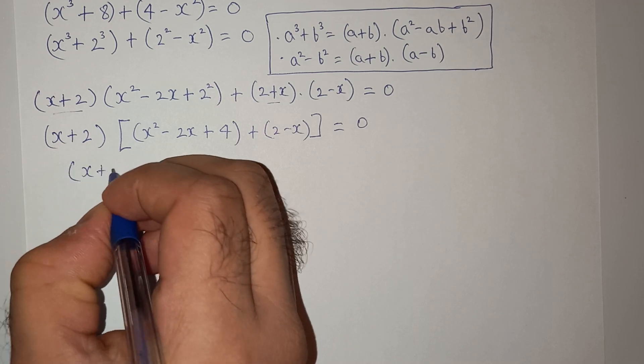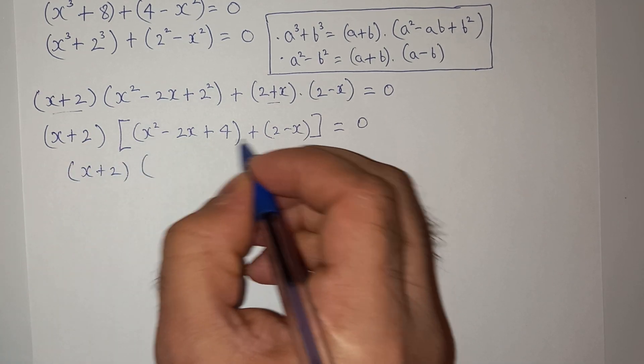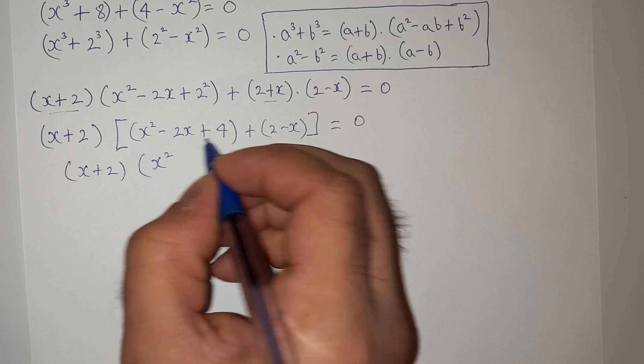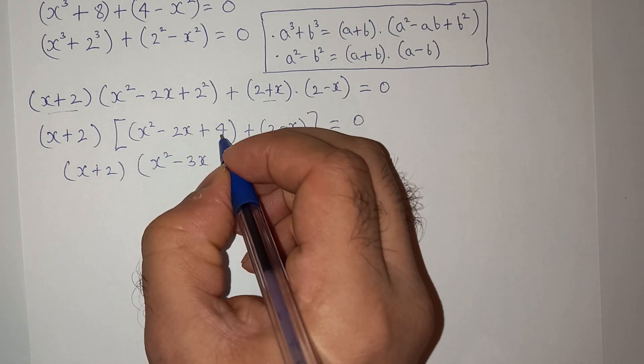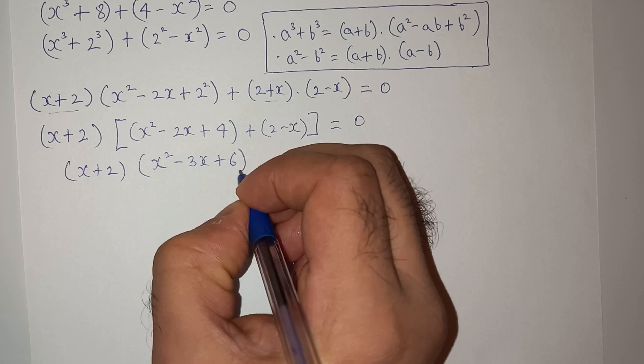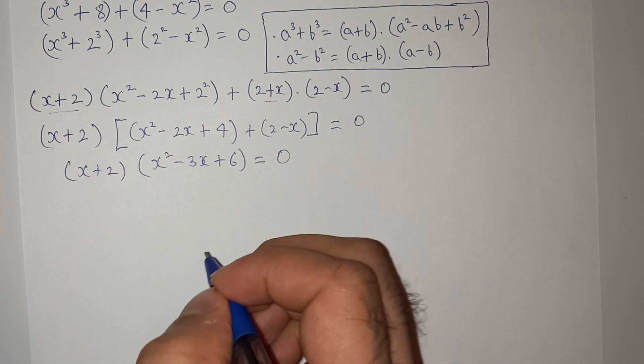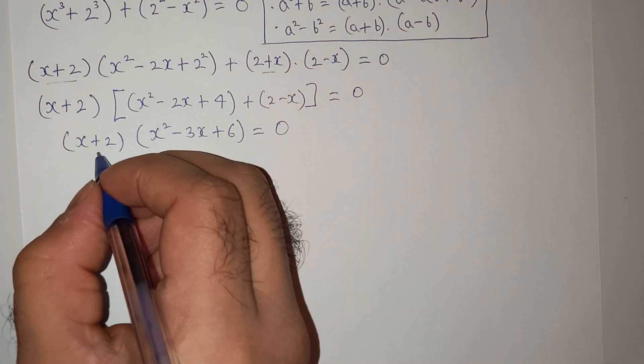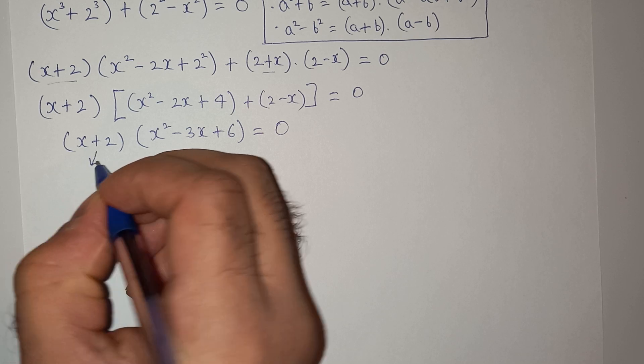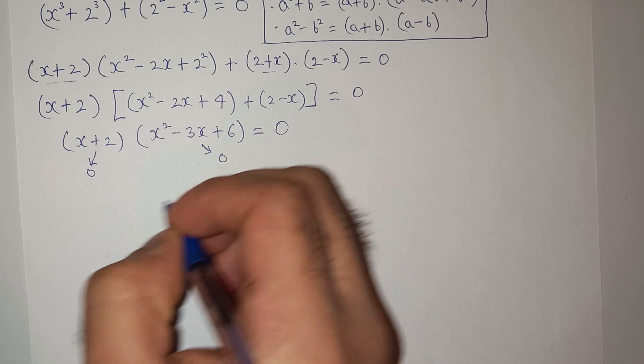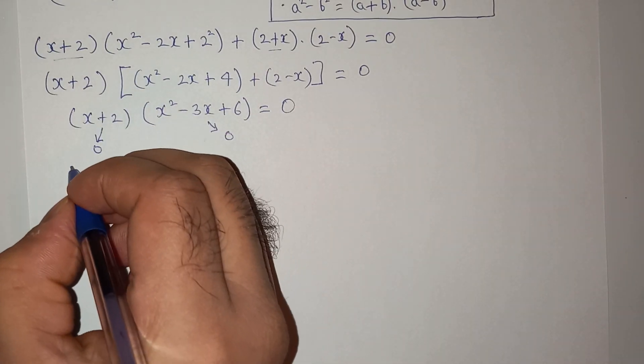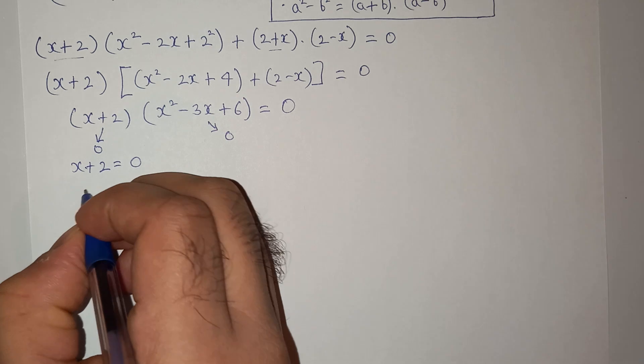So this will be (x plus 2)(x squared minus 2x minus x is minus 3x, 4 plus 2 is 6) equals to 0. So we have two solutions: one is this will be equals to 0, and the second term will be equals to 0. So from this, x plus 2 equals to 0.